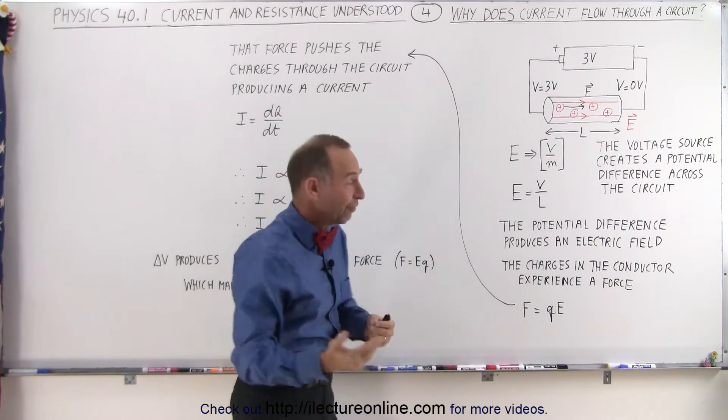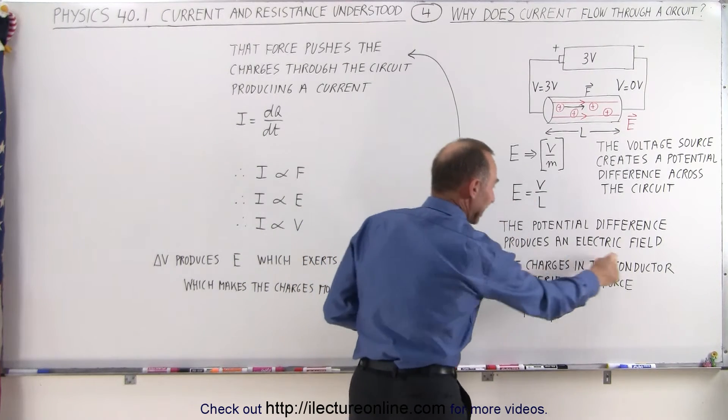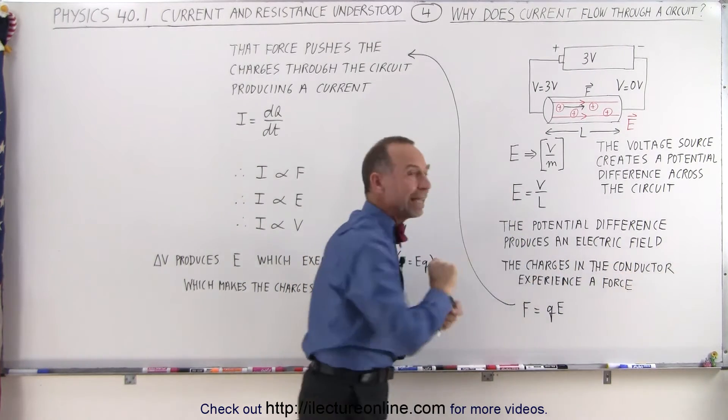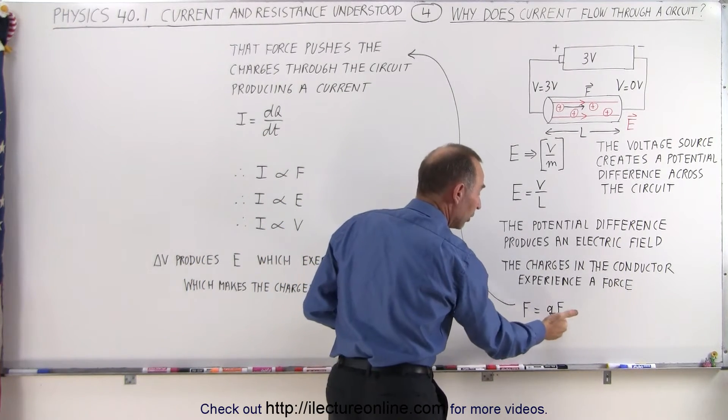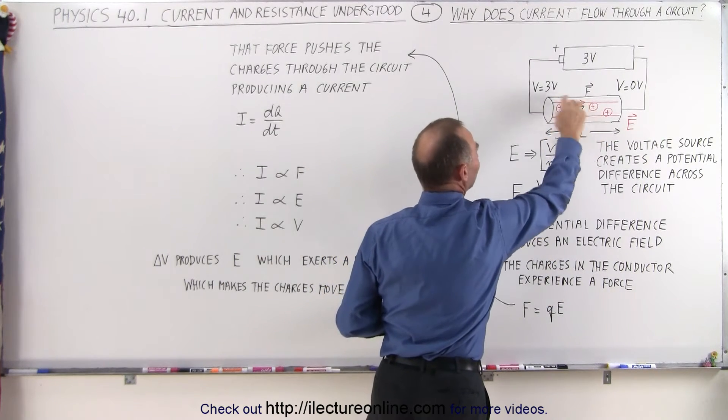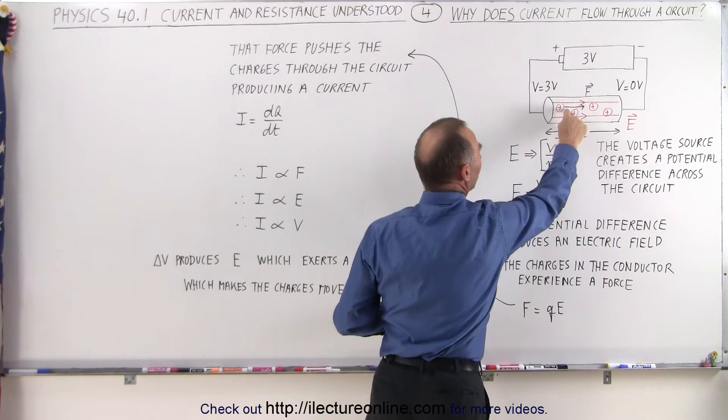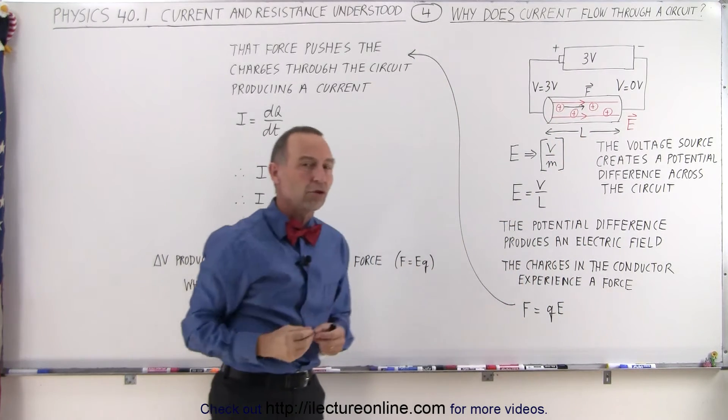Now, that potential difference creates an electric field and the charges in the conductor experience a force while they're inside that field. And the force is equal to the charge value times the strength of the electric field. So every one of these charges inside the conductor feels a force equal to the strength of the electric field times the size of the charge.